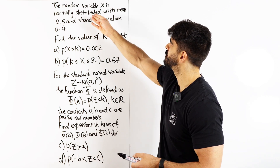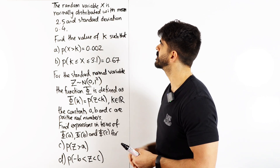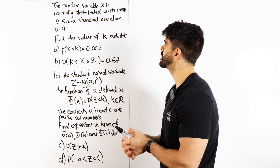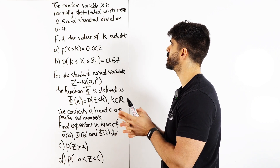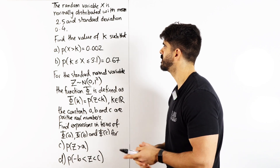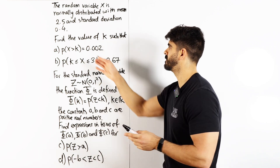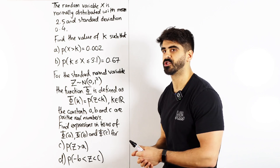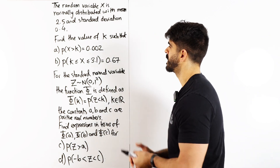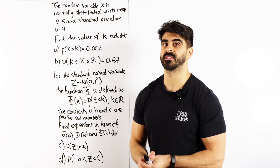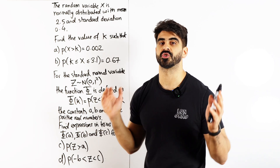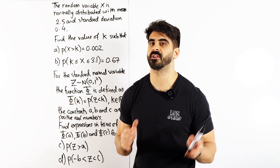The random variable x is normally distributed with mean 2.5 and standard deviation 0.4. Find the value of k such that these two situations are the case. When you do the normal distribution, just draw a sketch.